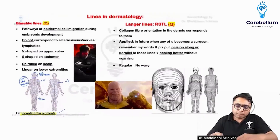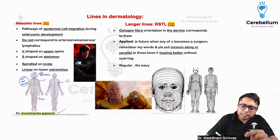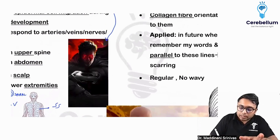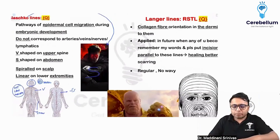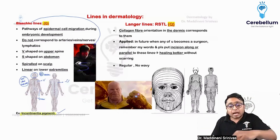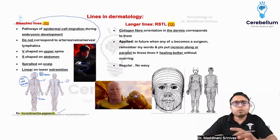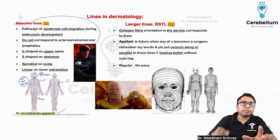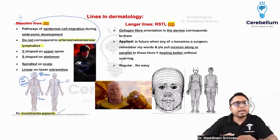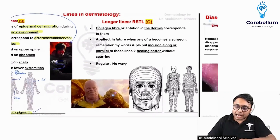To remember the anterior S-shape, think of Blashko as looking like 'Black' — as in Black Superman. With 'Black Superman' you can remember the S-shape and that lines do not cross the midline. This helps avoid confusing Blashko's lines with Langer's lines in the exam. One more important negative point: these lines do not correspond to arteries, veins, nerves, or lymphatics — nothing. They are purely epidermal cell migration pathways during embryonic development.